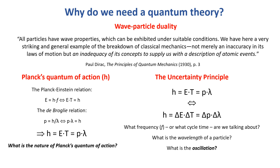We also have this weird physical constant that pops up at the atomic and subatomic scale: Planck's constant. The Planck-Einstein relation relates it to an energy and a frequency. If there's a frequency, then there's an oscillation — what oscillation are we talking about? We also have the de Broglie relation, which relates momentum and some wavelength. Again, you wonder: what's the wavelength of a particle? If we have a frequency f, then we have a cycle time t — the inverse of f.